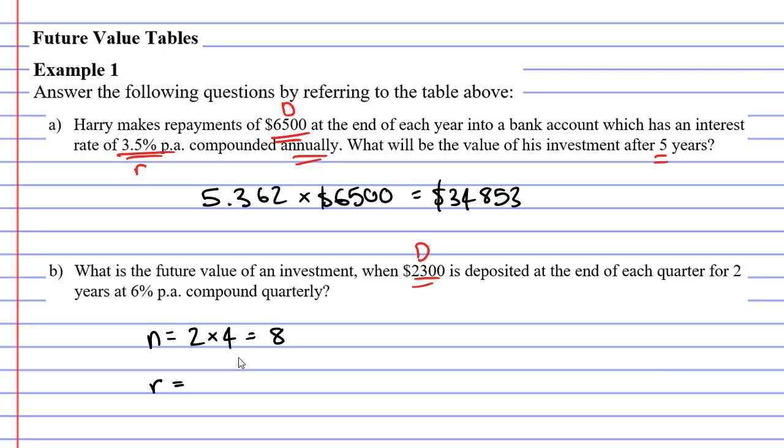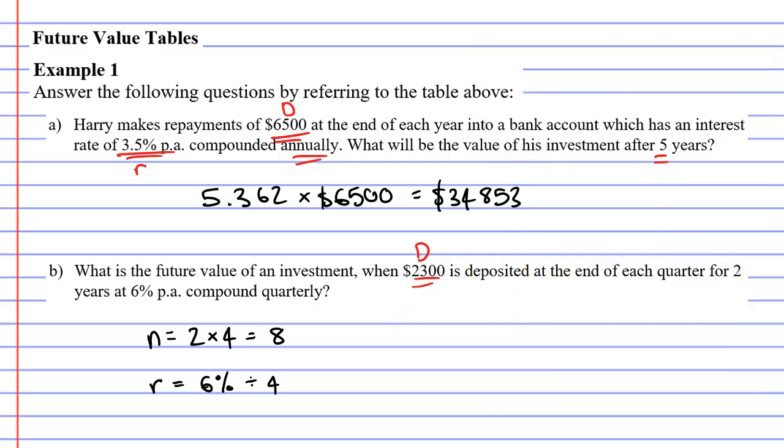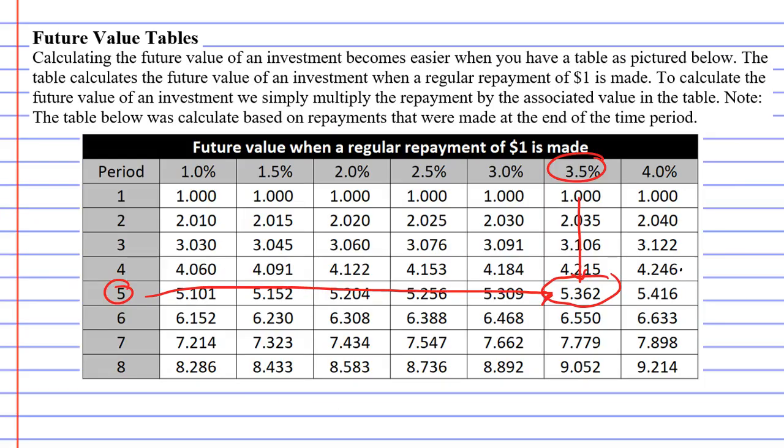Next, it says that the interest is compounded quarterly at an interest rate of 6% per annum. So, our interest rate, R, is 6%, but it needs to be divided by 4, because there's four quarters in a year. So, this comes out to 1.5% per quarter, rather than 6% per annum or per year. Now, we need to remember these two values. We need to remember N, and we need to remember our interest rate of 1.5% as we go back to our table.